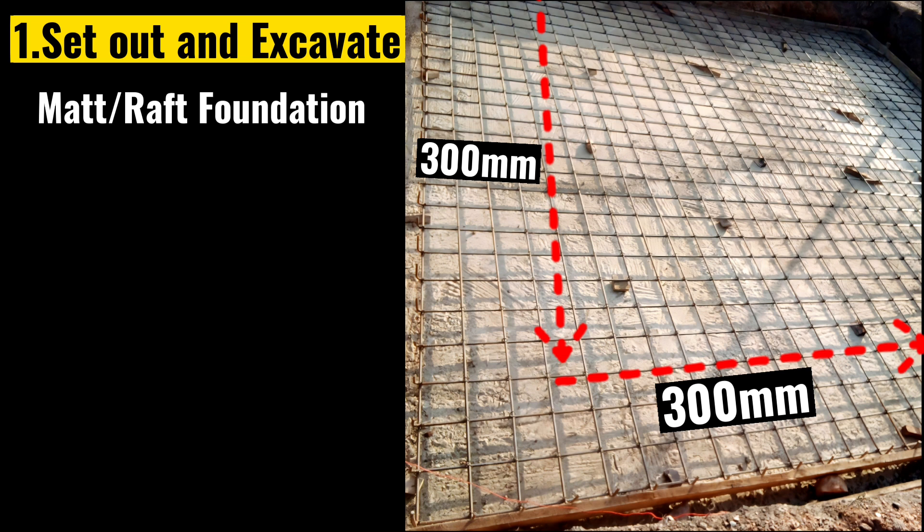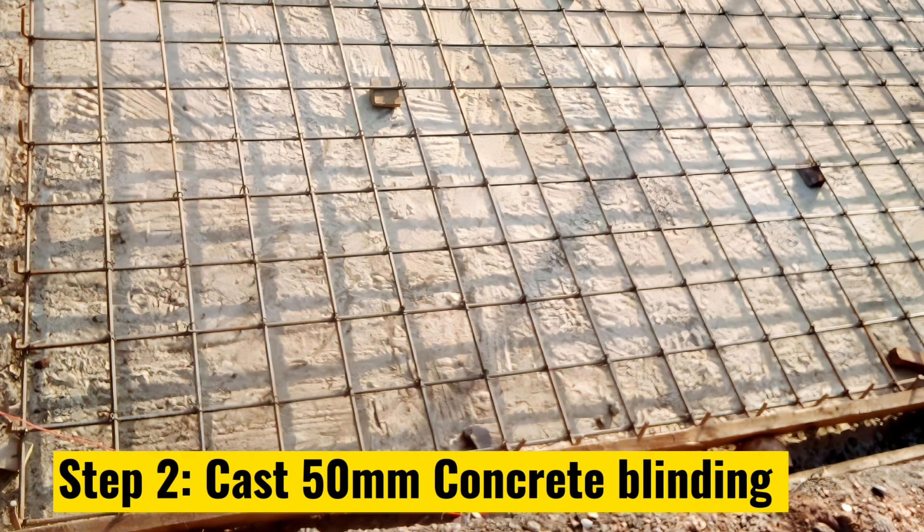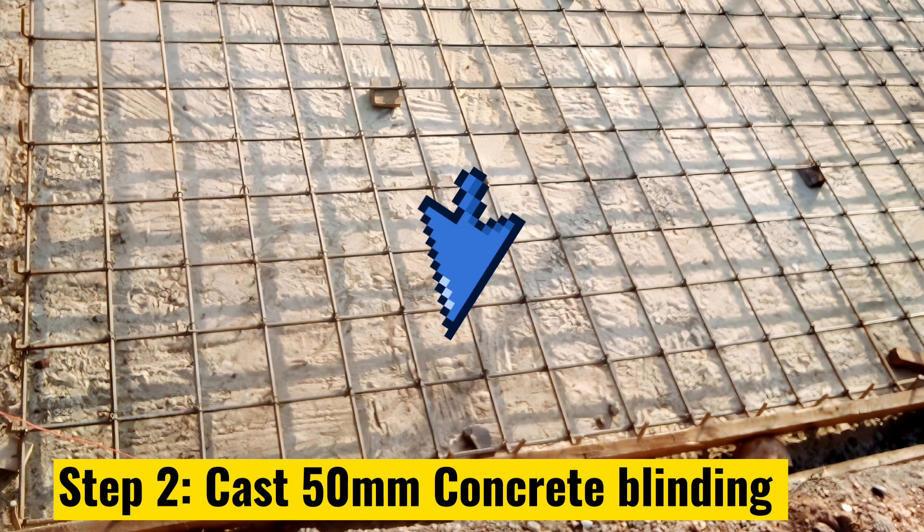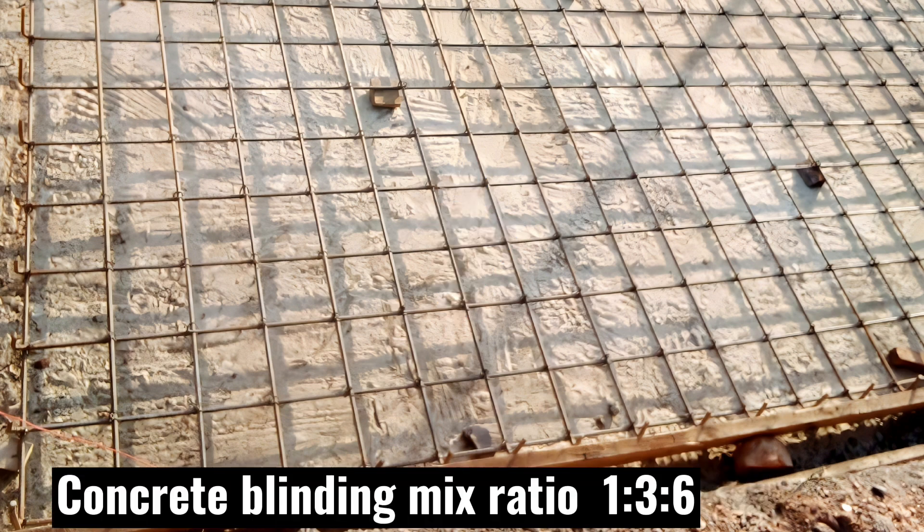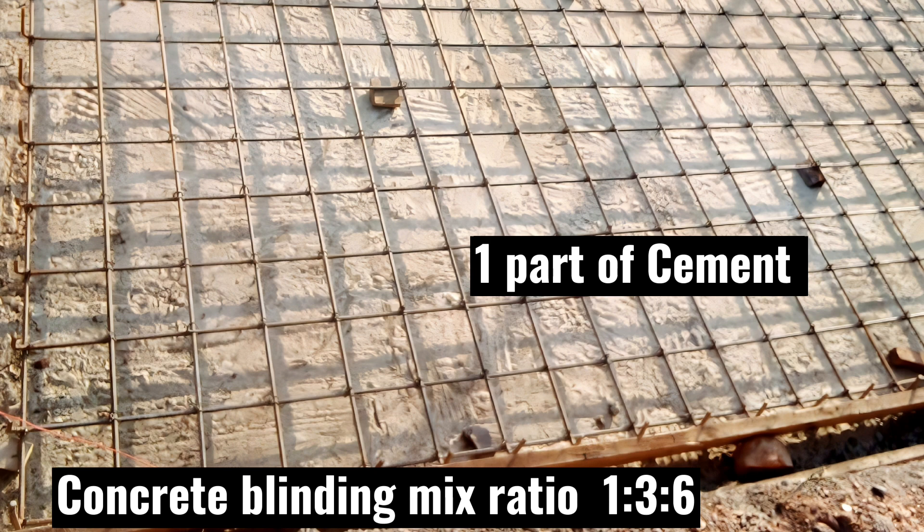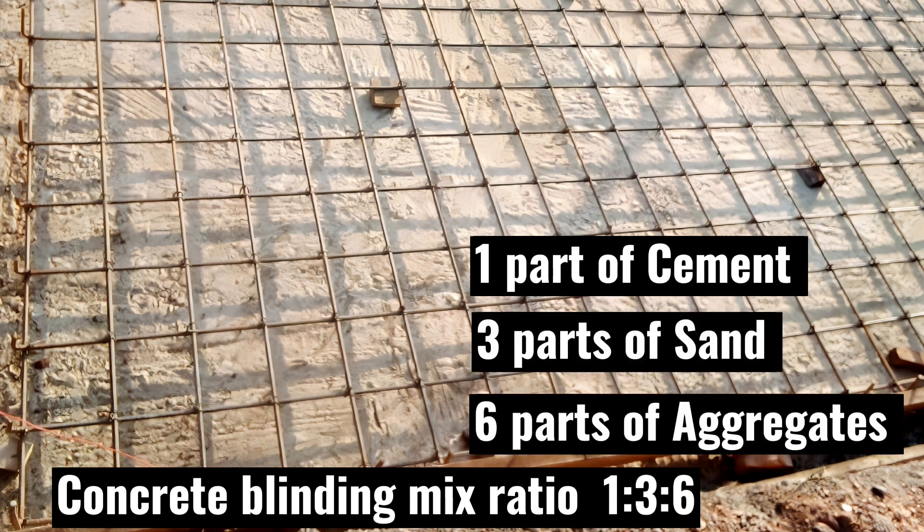Excavate up to 600mm below the ground. Step 2 is to cast a 50mm thick grade 15 concrete blinding with mix ratio 1:3:6. That is 1 part of cement, 3 parts of sand and 6 parts of aggregates.